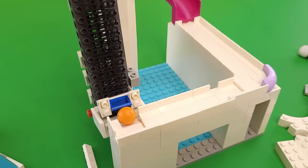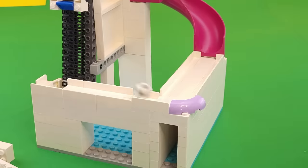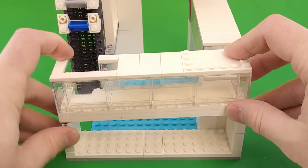I set up a track from the slide back to the escalator at the bottom, but after going down the slide, the balls had way too much momentum, so to contain them a bit more, I turned the path into a tunnel.